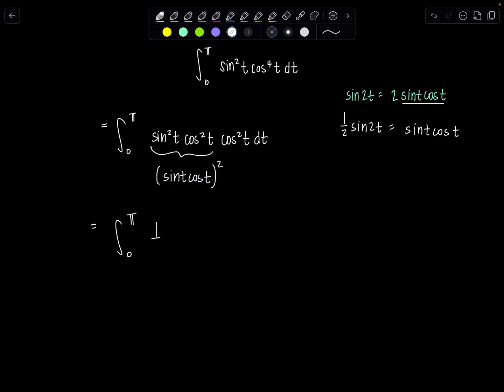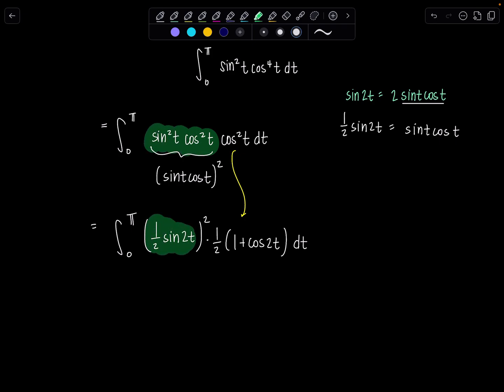So we've got zero to pi, one half sine 2t squared. And then what do we do with this cosine squared t? We use our half angle identity. So cosine squared t I can replace with one half times one plus cosine 2t dt. All of this got replaced with one half sine 2t squared. And then cosine squared t is replaced with one half times one plus cosine 2t.